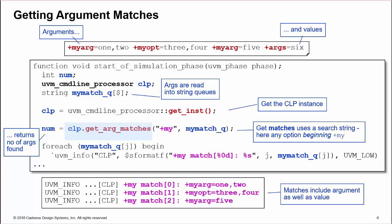Note for getArgMatches, the entire plusArg, with both argument and values, is stored in the queue and will need further processing to extract individual values.